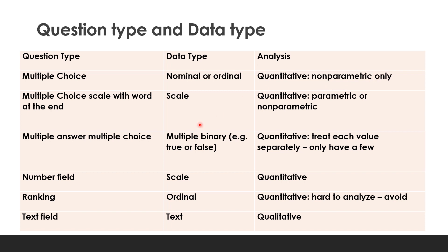For multiple answer (multiple choice), it is binary — either true or false — so treat its values separately. For number field, the data type is scale and it is quantitative. For ranking, it is ordinal and quantitative but hard to analyze, so avoid it. For text fields, the data is qualitative.